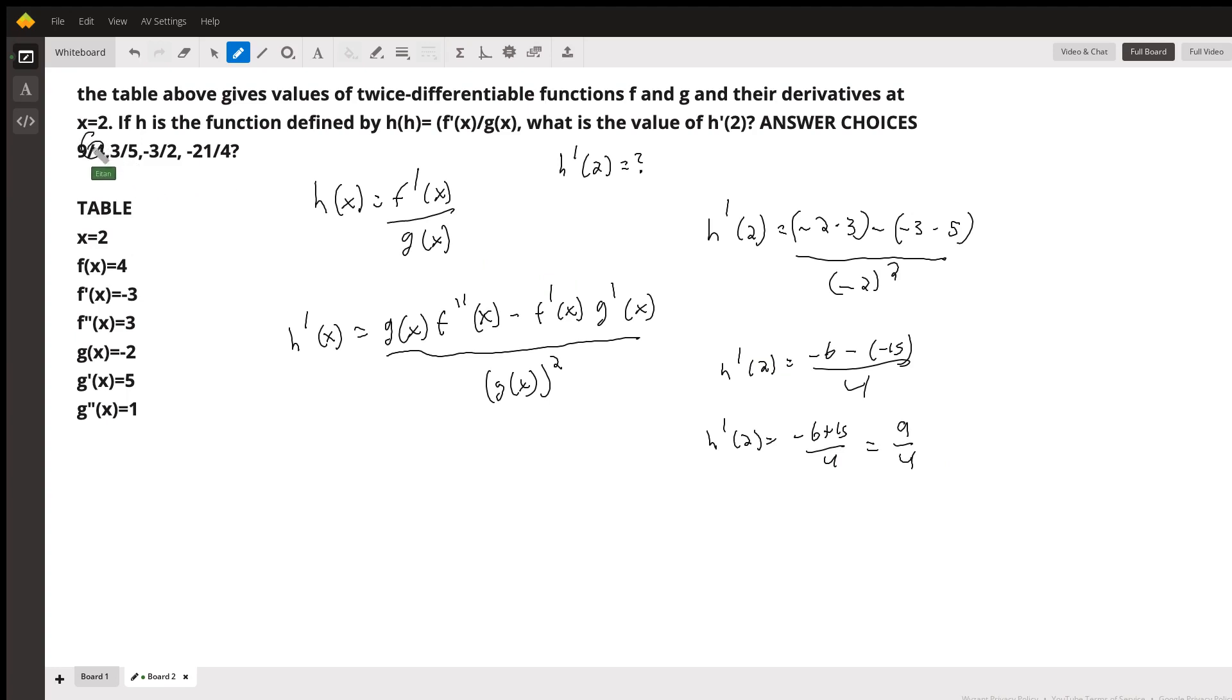And I can see that that was one of the answer choices, so I'm pretty sure we got that right on that one. So yeah, I hope that helped. The correct answer is 9 over 4.